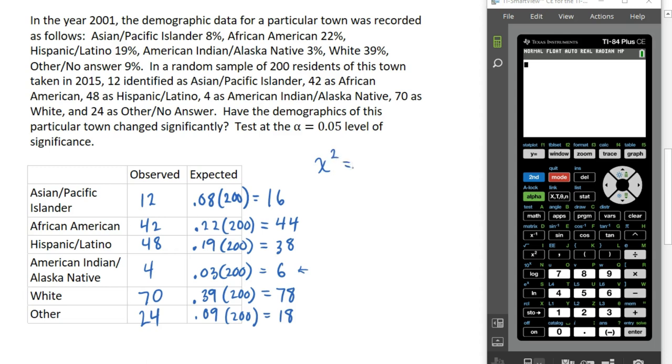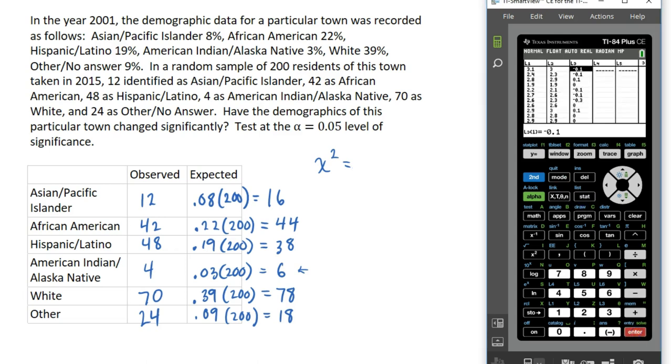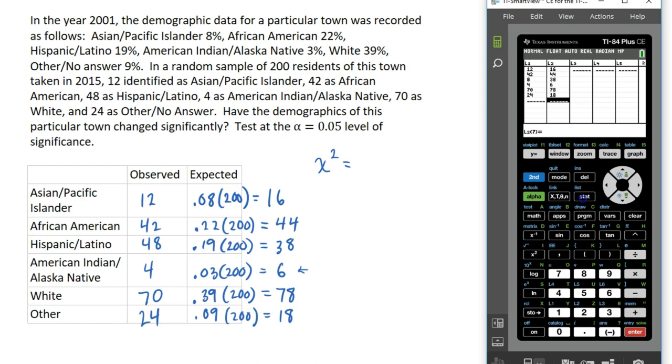On our calculator, we're going to first enter our data. So we're going to go to stat and edit, and we're going to clear out whatever is in here. In list one, we are going to enter our observed. Then we're going to go over to list two and enter the expected.